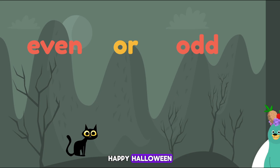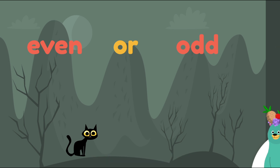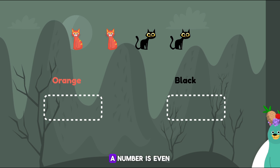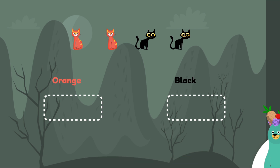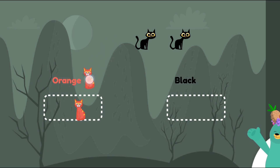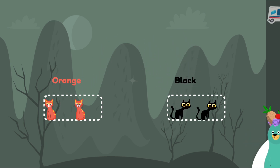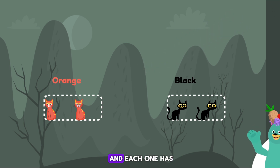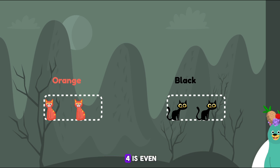Happy Halloween! Today we're going to learn about even numbers and odd numbers. A number is even if it can be divided into two equal groups. Let's check if the number 4 is even or odd. Divide the cats into black and orange. There are two baskets, and each one has the same amount of cats. That means the number 4 is even.